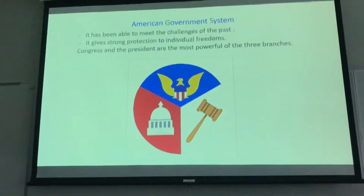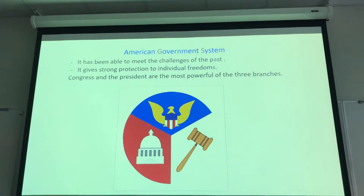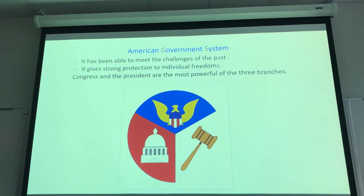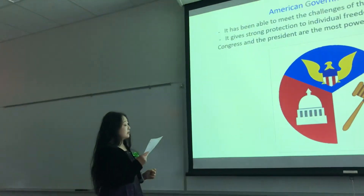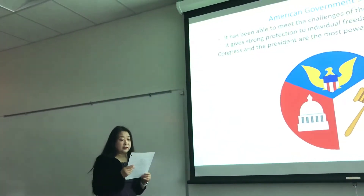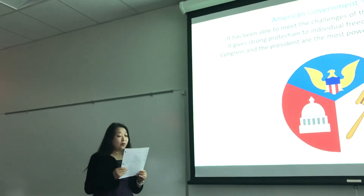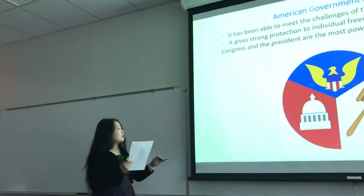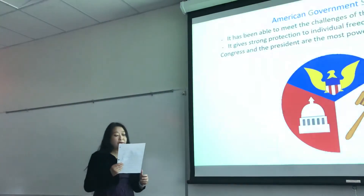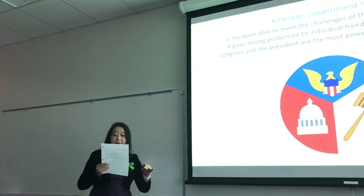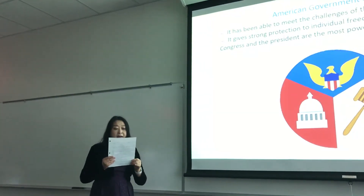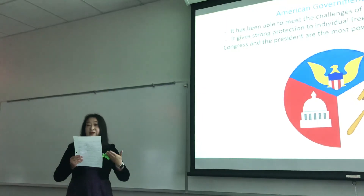The American government system of checks and balances ensures that no branch abuses its power. Congress and the president are the most powerful branches. The Constitution gives each branch the power to stop another from acting alone. Most Americans still believe in this system, which has been able to meet the challenges of the past and gives strong protection to individual freedoms.